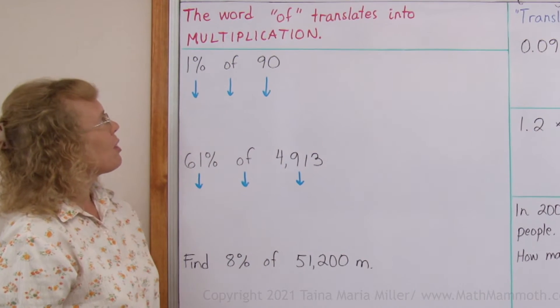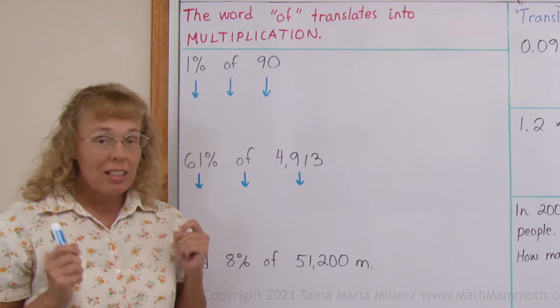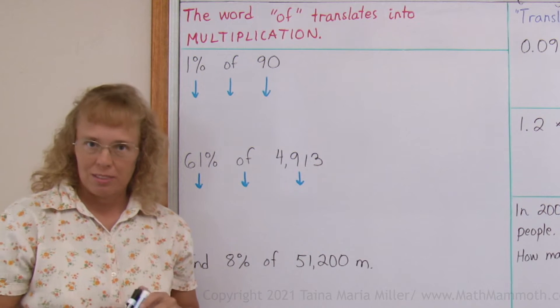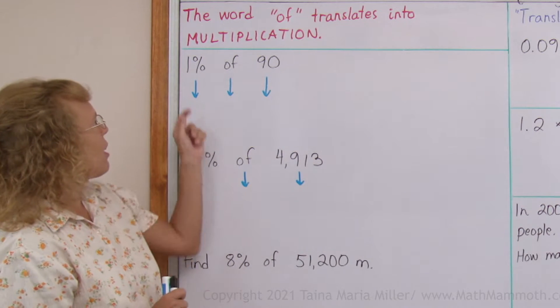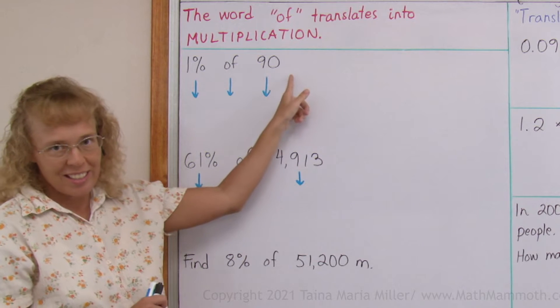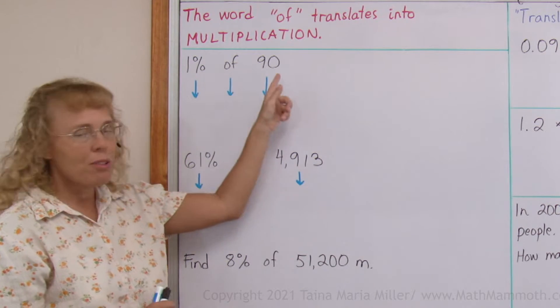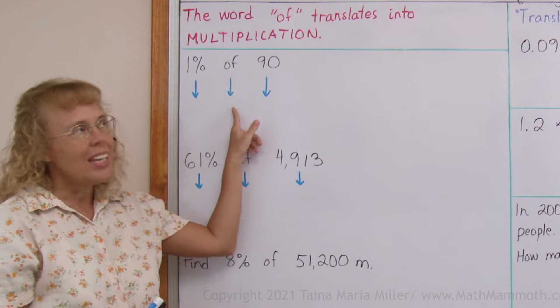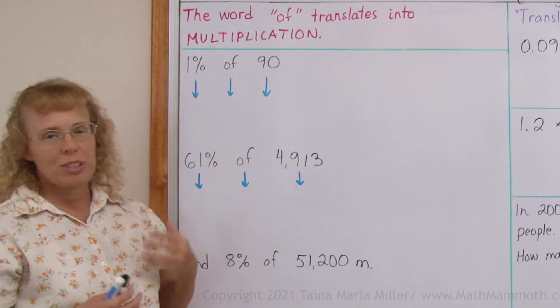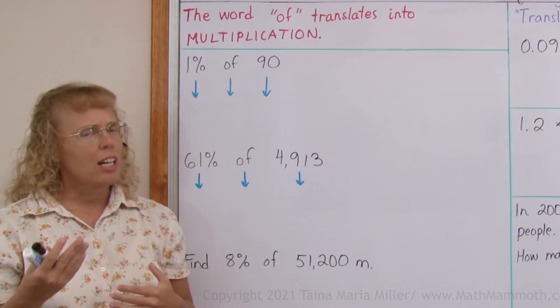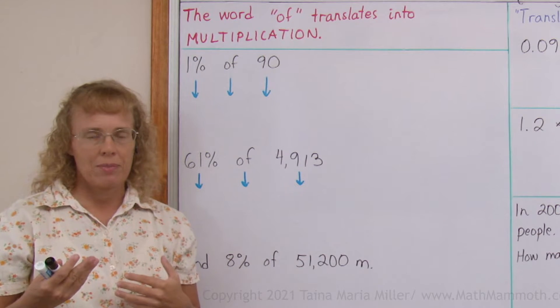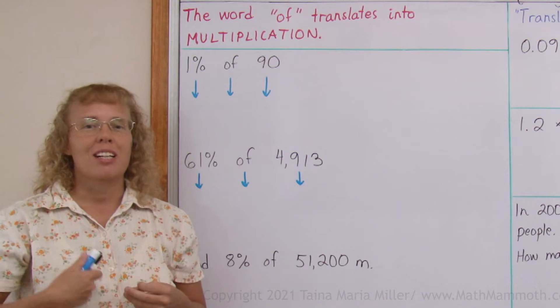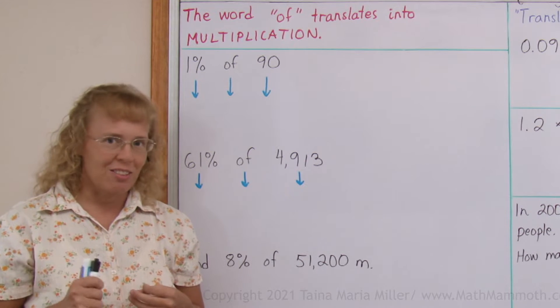The basis for all this is to remember that the word 'of' translates into multiplication. For example, if I have 1% of 90, then I can write this whole thing using multiplication. This 'of' becomes multiplication. And then any percentage I can change into a fraction or into a decimal. In this lesson I'm going to use decimals because those are quicker to use when I have a calculator.